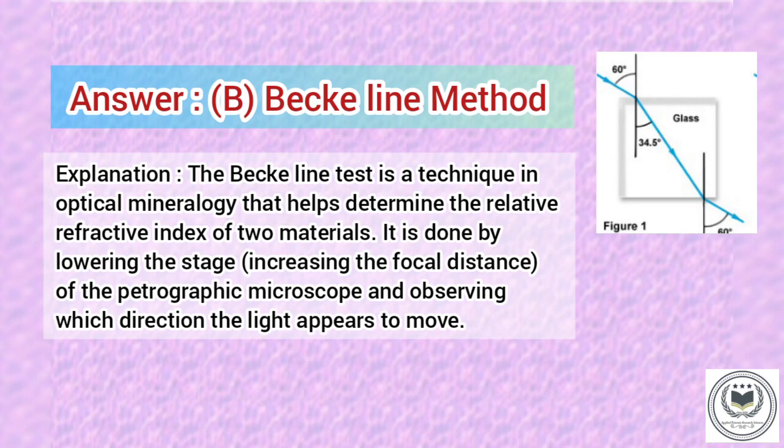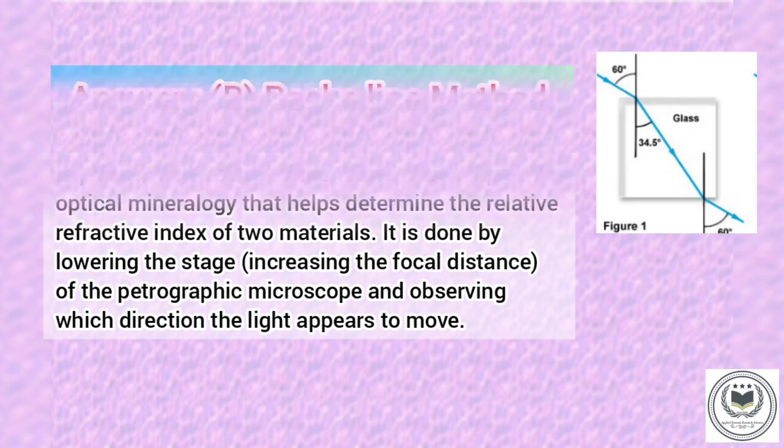The Bekeline test is a technique in optical mineralogy that helps determine the relative refractive index of two materials. It is done by lowering the stage of the petrographic microscope and observing which direction the light appears to move.